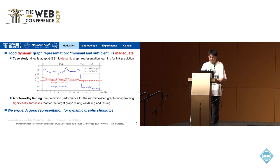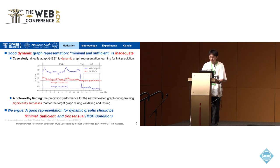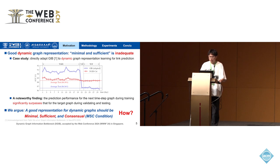Therefore, in this work, we answer that key question: a good dynamic graph representation should meet the minimal, sufficient, plus consensual — the MSA — condition. However, how to implement the MSA condition is an unknown challenge in the field of dynamic graph representation learning.